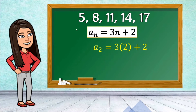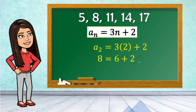Let's verify with the second term to check if we get 8 as an answer. A sub 2: substitute n by 2, so a sub 2 is equal to 3 times 2 plus 2. A sub 2 is 8. 3 times 2 is 6, and 6 plus 2 is equal to 8. So our general term is a sub n is equal to 3n plus 2.